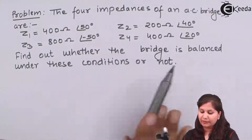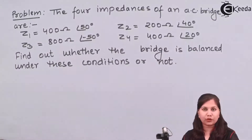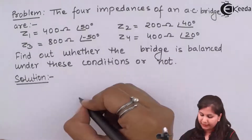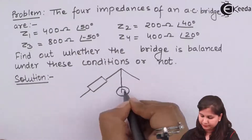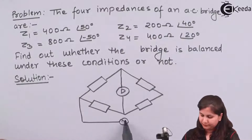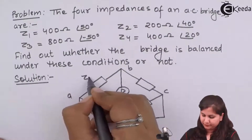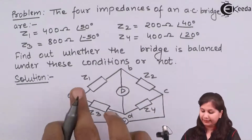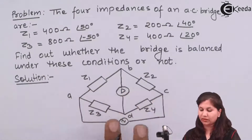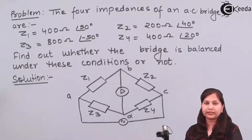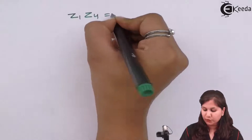Now we have to find out whether the bridge is balanced under these conditions or not. If we draw the circuit for an AC bridge, it has 4 arms: AB, BC, CD, and DA, with 4 impedances Z1, Z2, Z3, and Z4. The general balance equation for this AC bridge is Z1 × Z4 = Z2 × Z3.